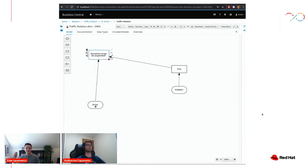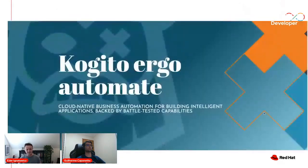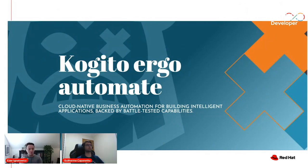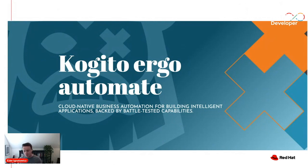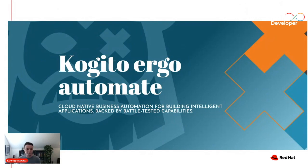Two years ago, we started Kogito. At Red Hat, we decided to revisit all the business automation platform — instead of having a single monolith where you alter and deploy everything, we moved to microservices. Everything became a microservice. During this initiative, it gave us a chance to also revisit how we build tooling, because we went from a handful of engineers to a team of almost 30 front-end engineers, and this team will keep growing. So we decided to step back and understand how to build a better platform.